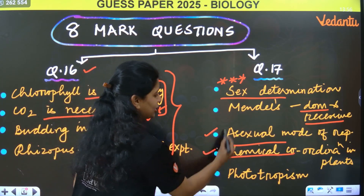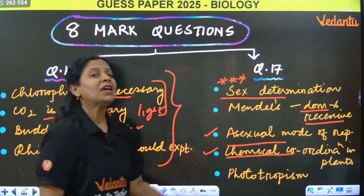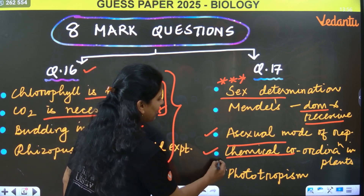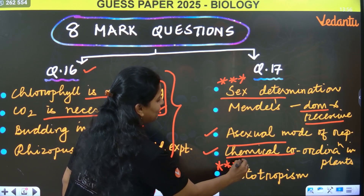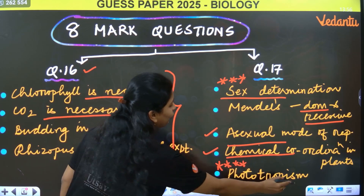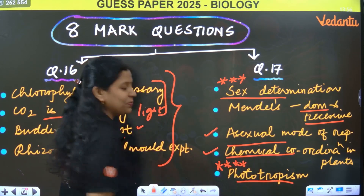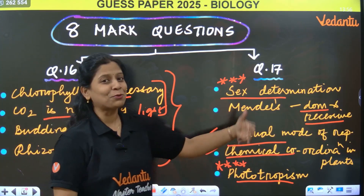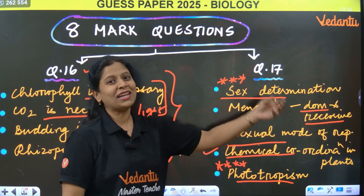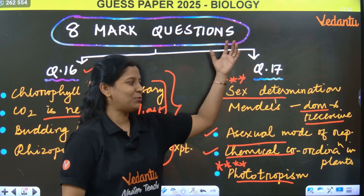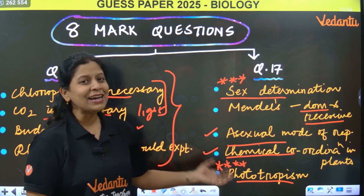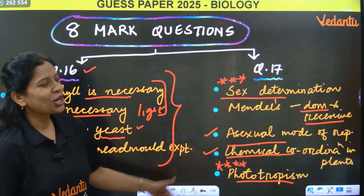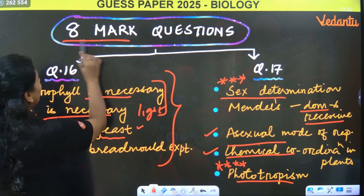Now I will explain it here. I have a very important question — a super five-star important question: Phototropism. Plants, I have phototropism. I have a proof of this activity. So these are the short 8-mark questions for you people — 8-mark questions number 16 and 17, with internal choice.